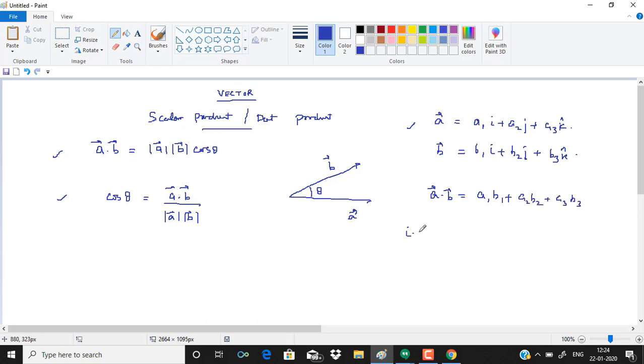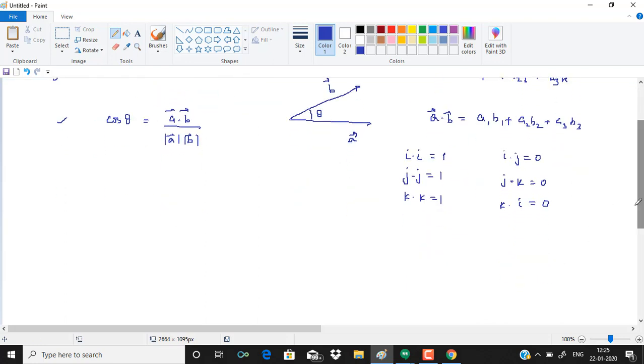Because i dot i is equal to 1, j dot j is equal to 1, k dot k is equal to 1. i dot j is equal to 0, j dot k is equal to 0, k dot i is also equal to 0. These are vectors along x-axis, y-axis and z-axis.